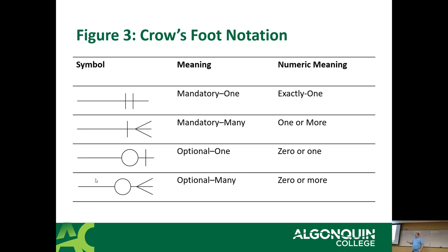Then you've got optional many — that means you could have zero, one, or more items associated with it. A good example is when they assign me a course. They'll assign me a course section, but I don't have any students yet. So this course section has zero, one, or more students. At one point it has no students, then when they enroll the first student we have one, then two, three, 100 — whatever it is in that section. So that means there's an optional many. In other words, the parent can exist without any children.